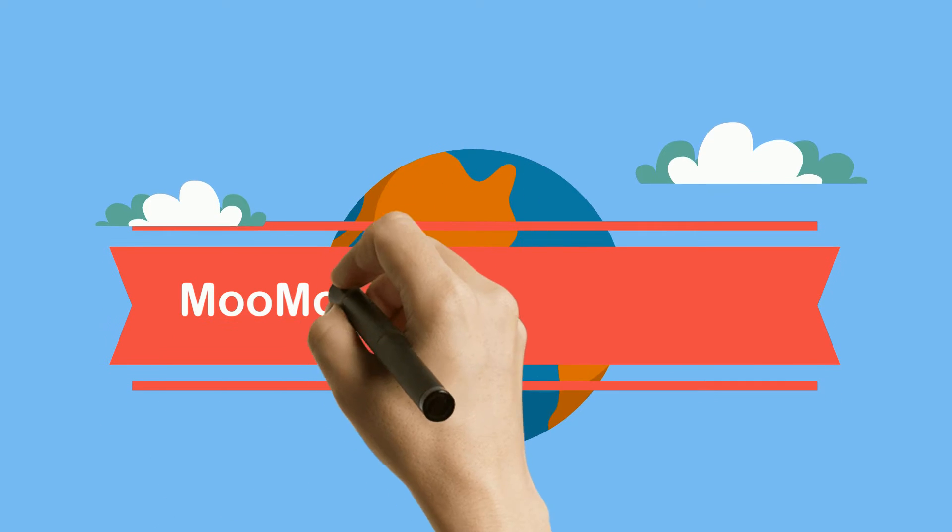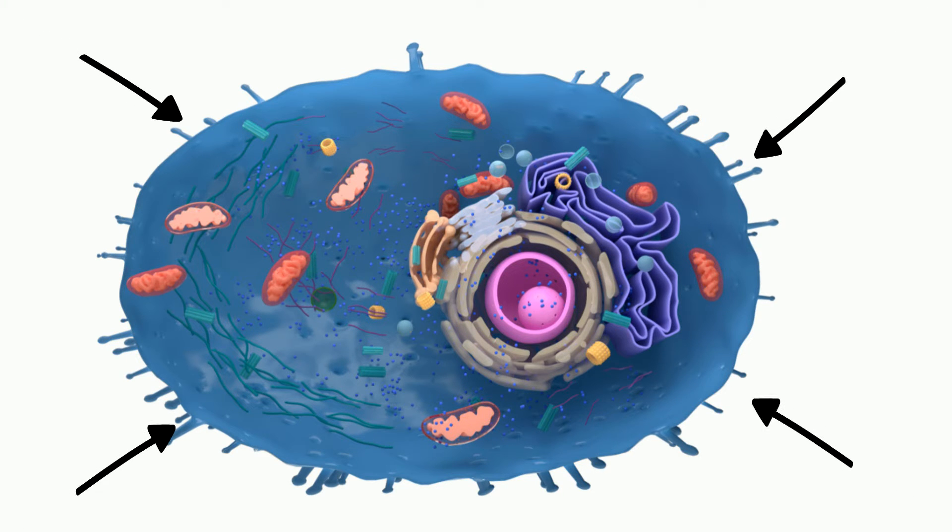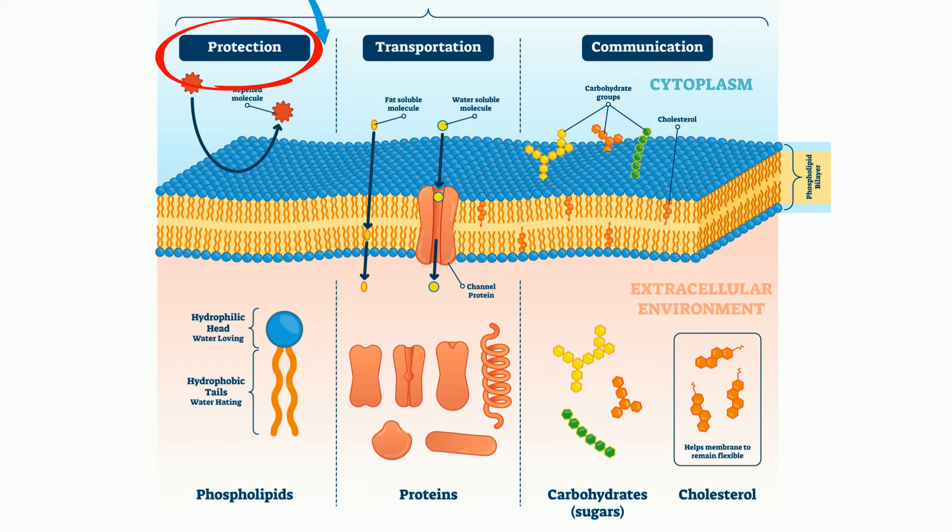Welcome to Moo Moo Math and Science and the Cell Membrane. The cell membrane is a very complex layer that surrounds the cell. It helps with protection, transportation, and communication.